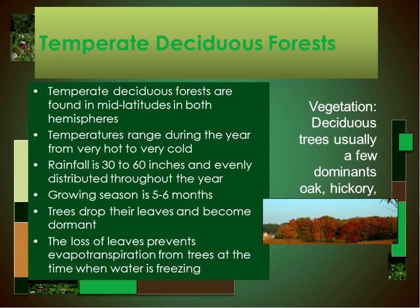The characteristics of the temperate deciduous forests are mid-latitudes in both hemispheres. Temperatures range from very hot to very cold. Rainfall is 30 to 60 inches, somewhat higher than the other systems we've talked about. This is enough moisture to support trees. The rainfall is also evenly distributed throughout the year, which is also helpful to supporting trees. But these biomes have to get through a shorter growing season, which is five to six months, and a very cold winter. So the trees drop their leaves and become dormant during the winter. By shedding their leaves, the trees cannot transpire, hence conserving water through the winter.